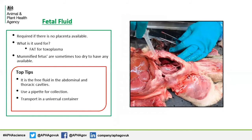Fetal fluid. This sample is used for toxoplasmosis FAT if there is no placenta available. Fetal fluid is the free fluid in the pleural and abdominal cavities and can be sampled into a universal container using a pipette. Mummified fetuses often do not have any fetal fluid.